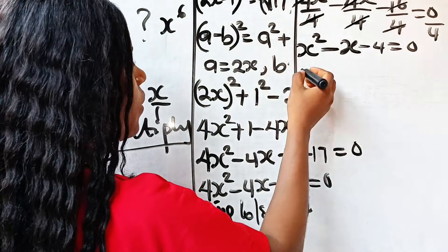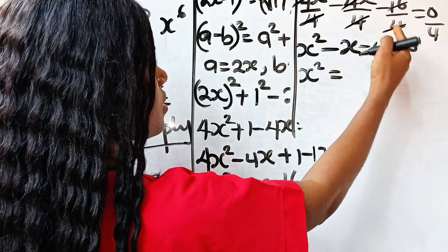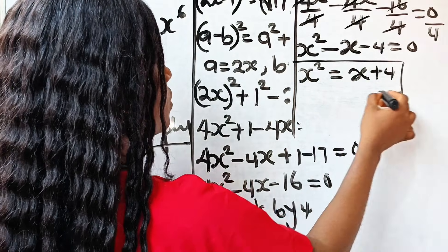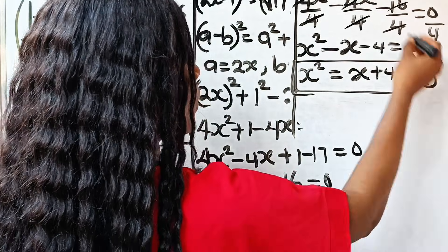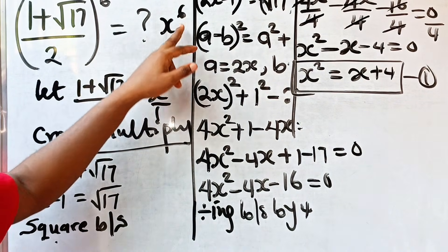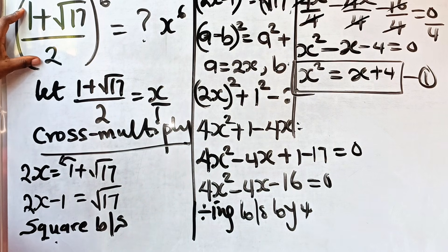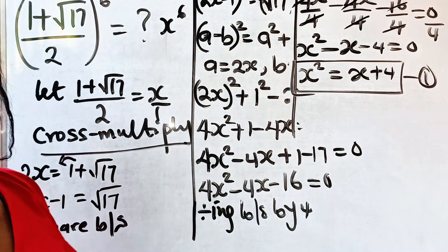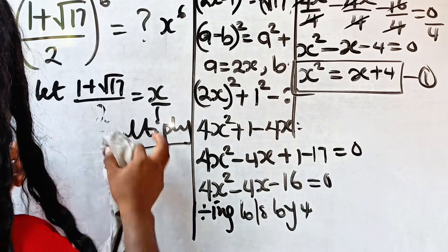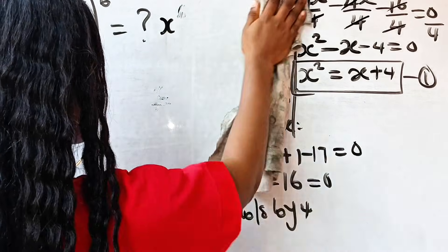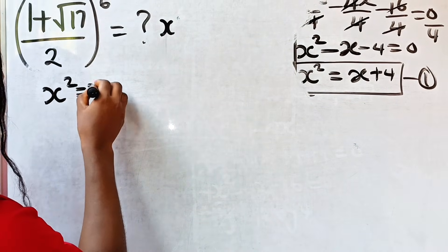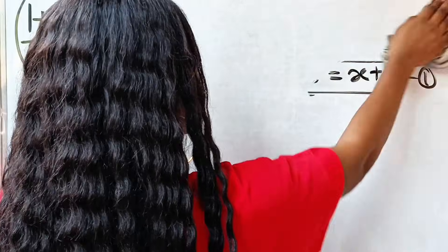Now we have x² = x + 4 after transferring the negative x to the other side and the negative 4 becomes positive 4. This is the most important equation — we call it equation 1. Let's go back to what we are looking for: x to the power of 6. So: x² = x + 4.